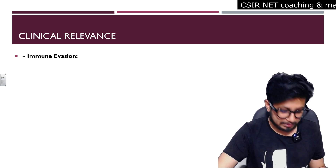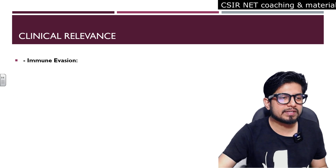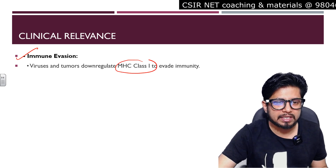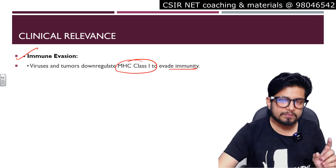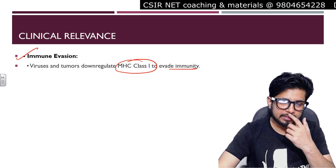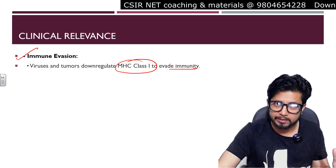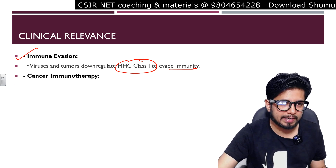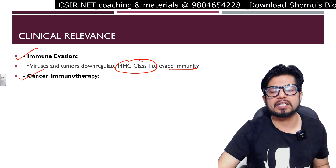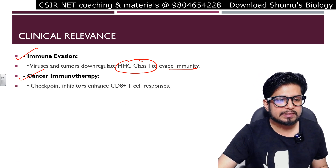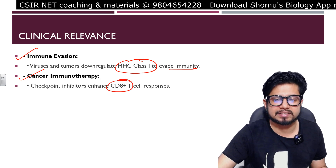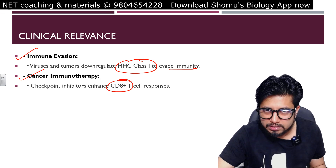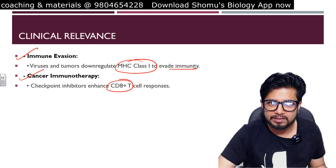Regarding clinical relevance: first, immune evasion — viruses and tumors downregulate MHC class 1 to evade immunity, because if MHC class 1 functions normally it is difficult for virus to spread or tumors to grow. Second, cancer immunotherapy — MHC class 1 is a target of cancer immunotherapy using checkpoint inhibitors that enhance CD8+ T cell responses to kill target cancer cells.